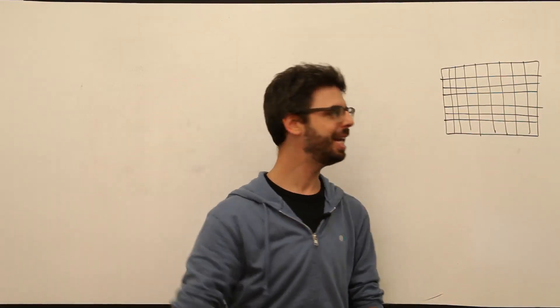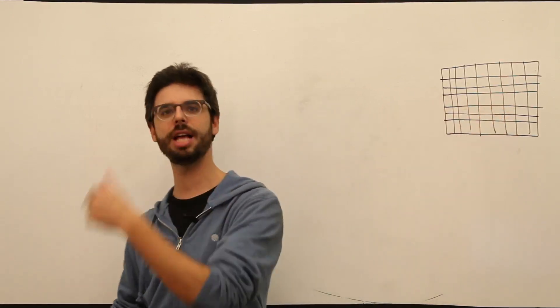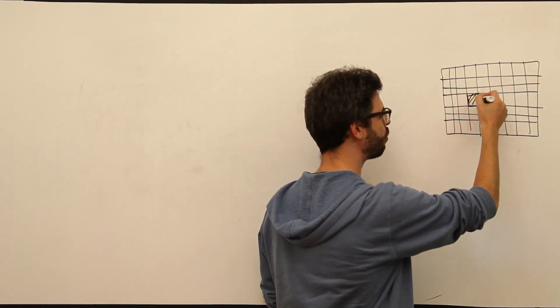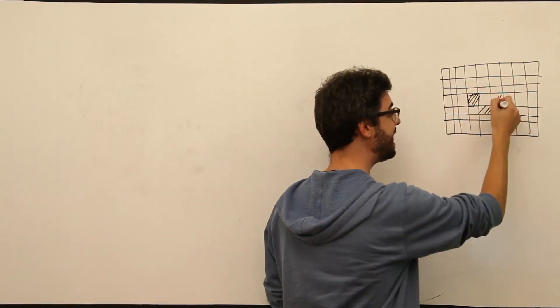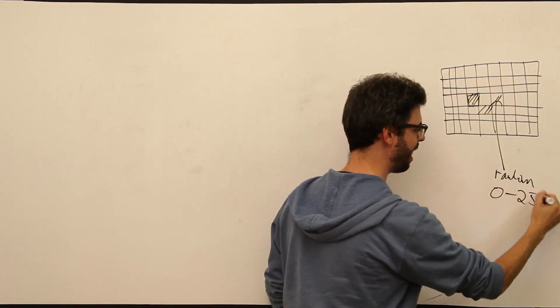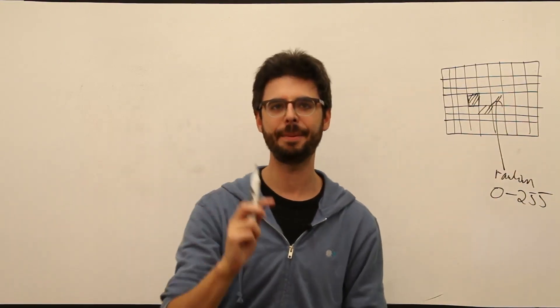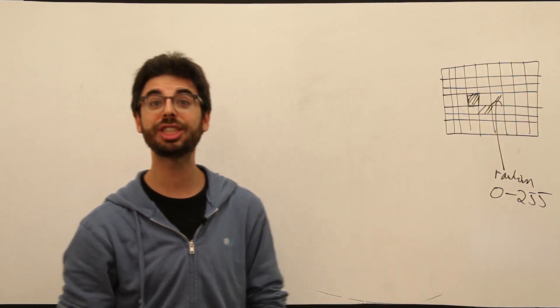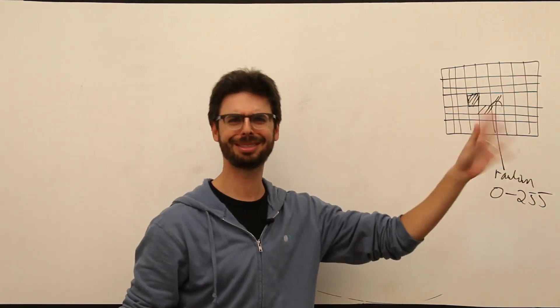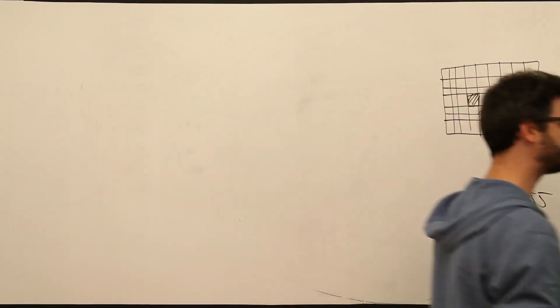But what if, instead of these lines going across and lines coming down, we actually want these to be rectangles, and rectangles that we could fill in. Perhaps each one is going to get a random brightness value between 0 and 255. How are we going to do that? Well, let's first see why the structure we have doesn't work.